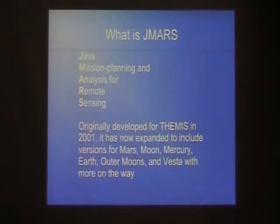JMRS is actually an acronym. It stands for Java Mission Planning and Analysis for Remote Sensing. We wrote it back in 2001 originally for the Themis mission to Mars. And it's been expanded from there to include the Moon, Mercury, Earth, Jupiter, and Saturn.